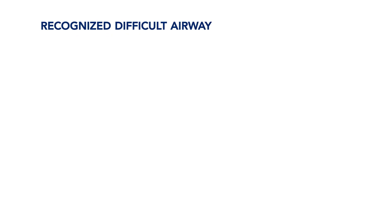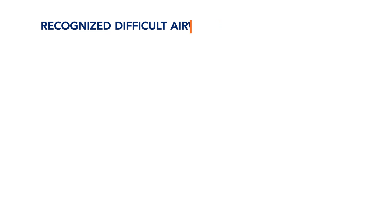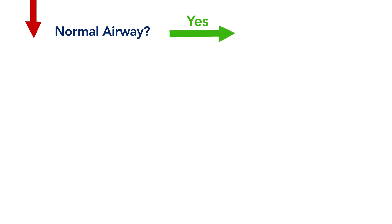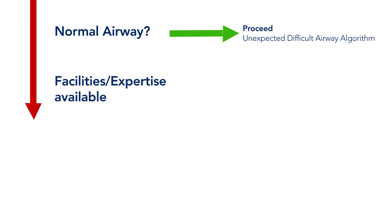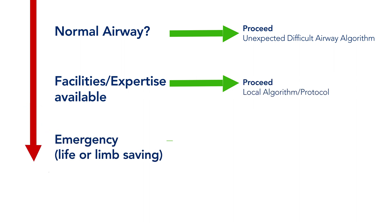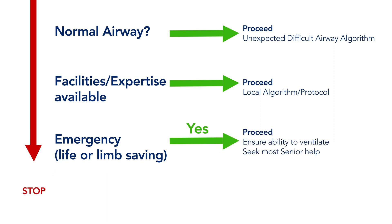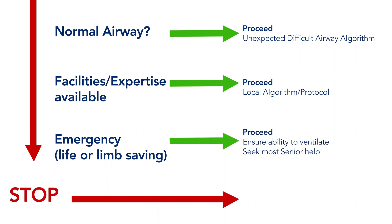The most important question you need to ask yourself upon recognising a possible difficult airway is: am I and are we equipped and experienced enough to deal with this difficult airway in our centre, or should we discuss with or refer to a specialised centre? When considering a child for sedation or anaesthesia, ask yourself whether this child has a normal airway. If not, subsequently ask yourself if you have the facilities and expertise to manage the airway safely. If not, and if there is no life or limb saving situation, do not start or stop the procedure and refer to a centre that specialises in management of difficult airways.